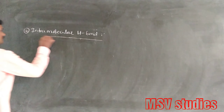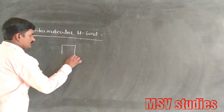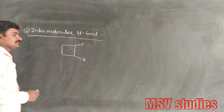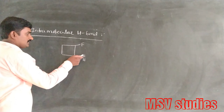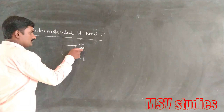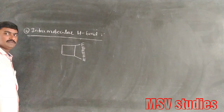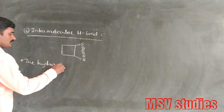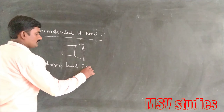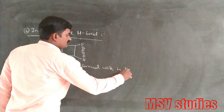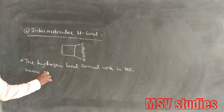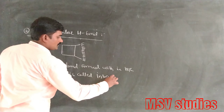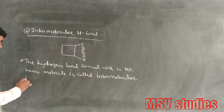Intramolecular hydrogen bond: if a molecule contains hydrogen and a higher electronegative element, and the hydrogen bond is formed within the same molecule, it is called an intramolecular hydrogen bond.